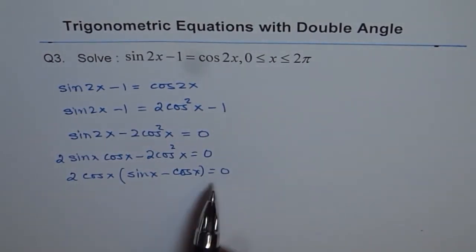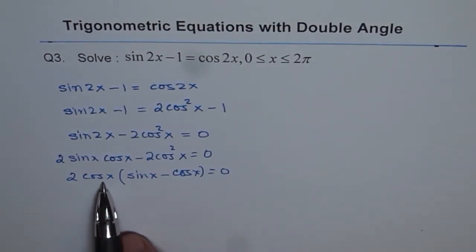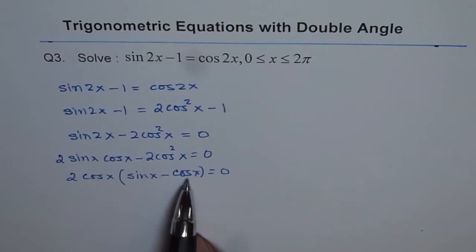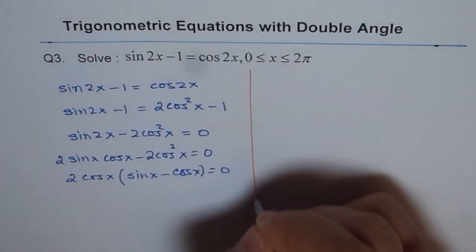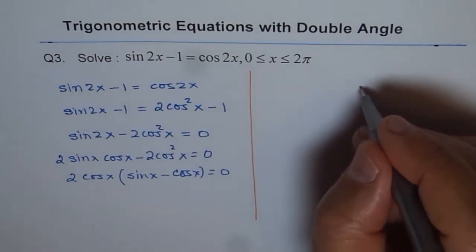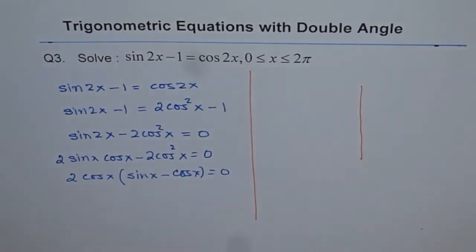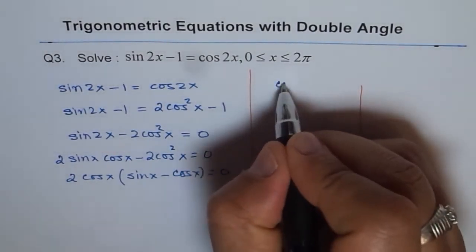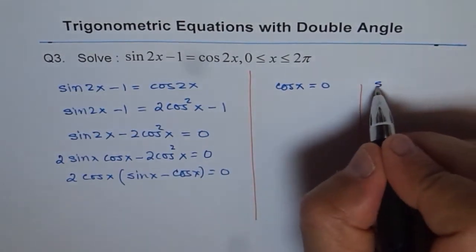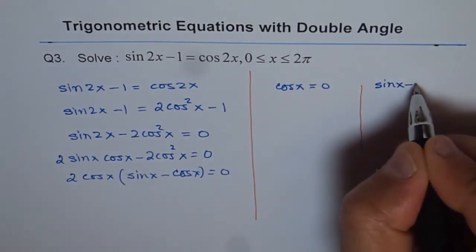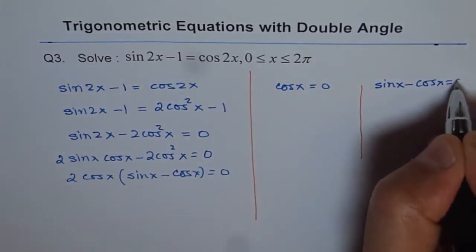For this to be 0, either cos x could be 0, or sin x minus cos x equals 0. We will use both these to find possible solutions in the given domain. So we have two possibilities: one is cos x equals 0, and the other is sin x minus cos x equals 0.